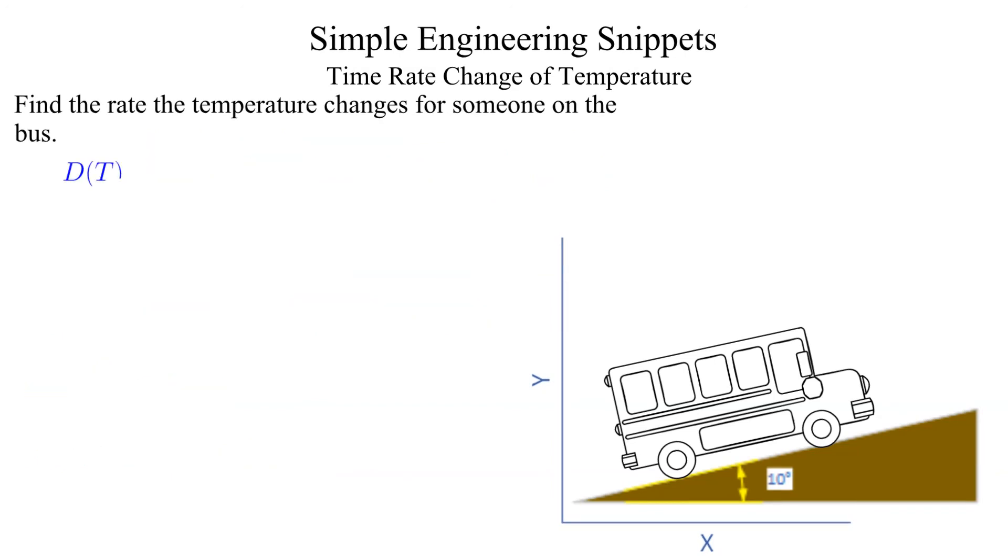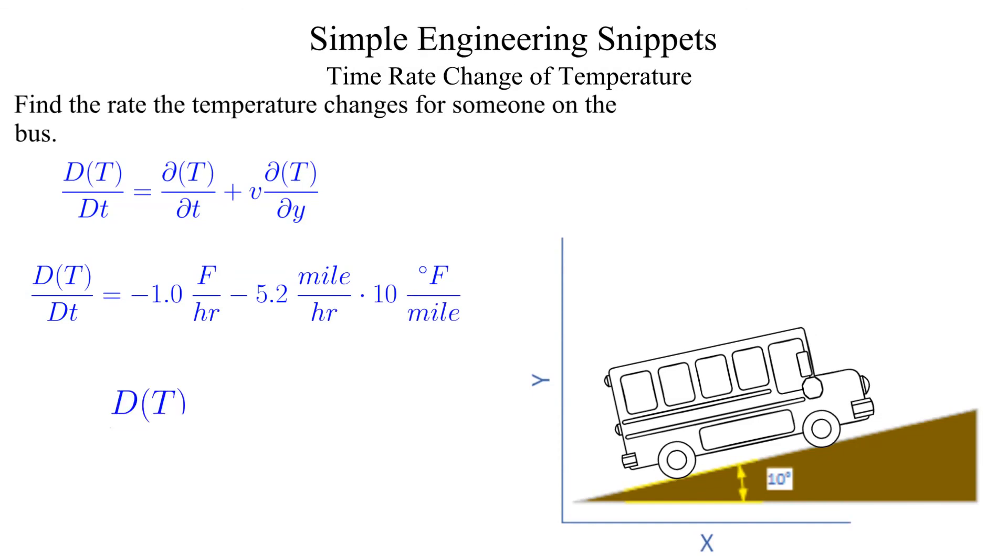Putting it all together, we find that a person sitting on the bus will experience a temperature change of minus 53 degrees per hour. That is a pretty significant temperature drop in one hour. This is likely why my wife always brings a sweater and or jacket. Yeah, which I end up carrying.